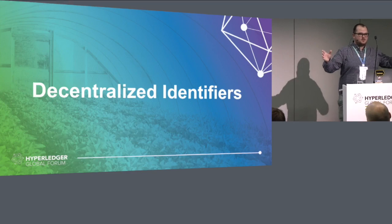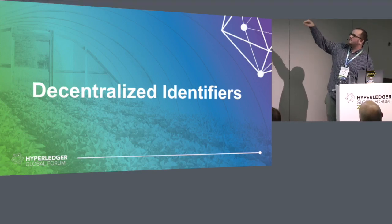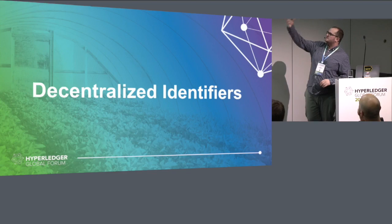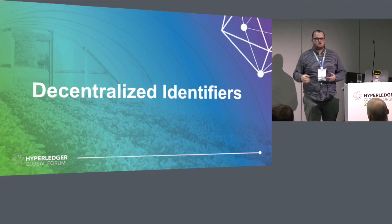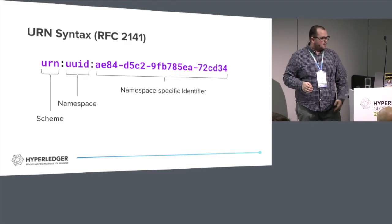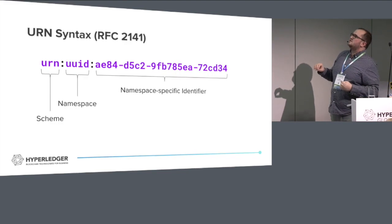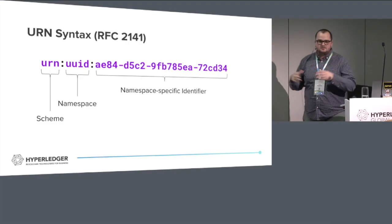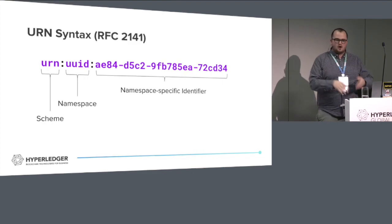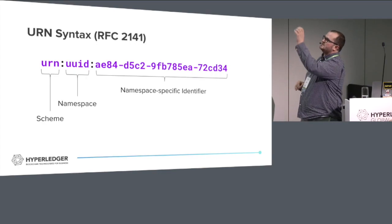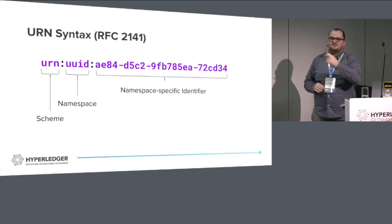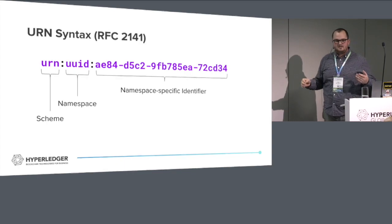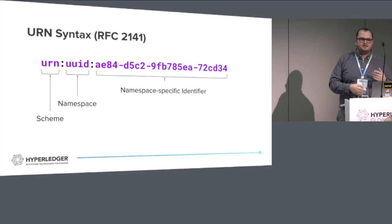We'll talk about decentralized identifiers. These are largely based on similar concepts that came from the URN syntax - URNs are a form of URIs. URNs specifically specify that you need 'urn' in front as a schema. We really like this syntax because it allows us to create a globally unique namespace while still being able to identify things in a common way and figure out more information about them.